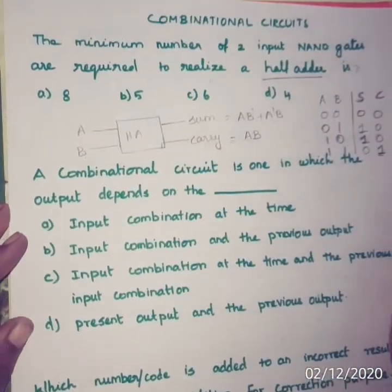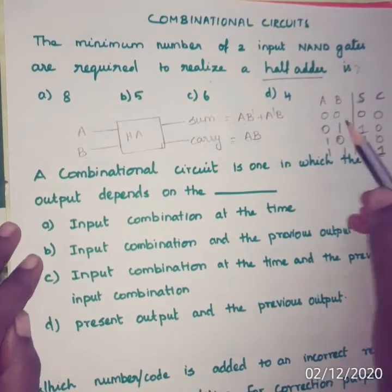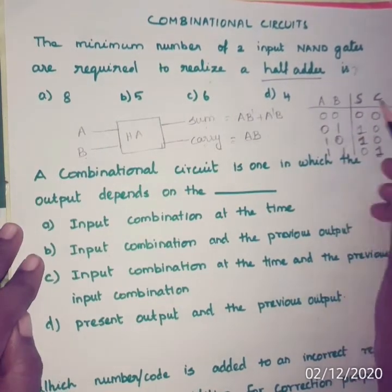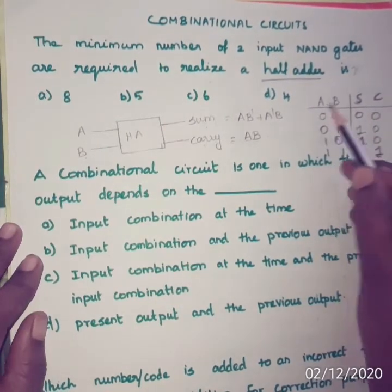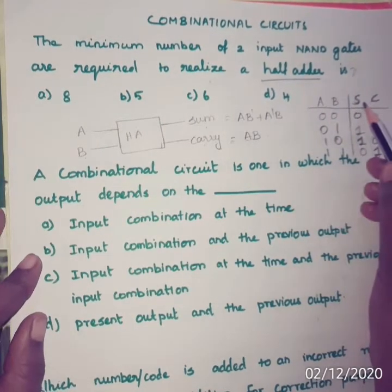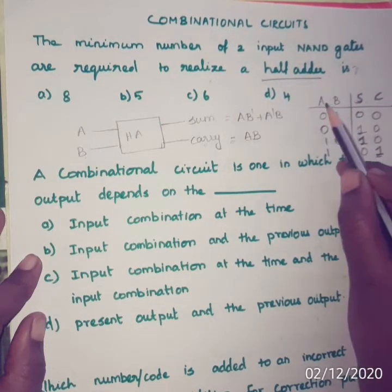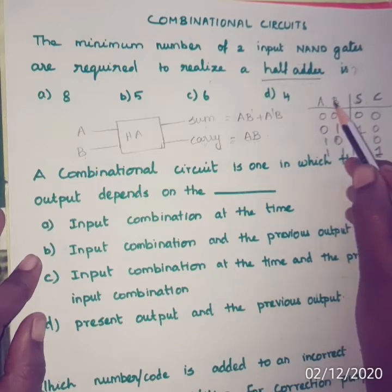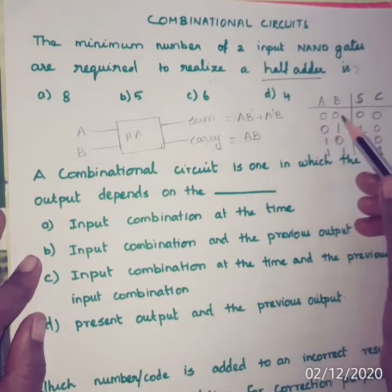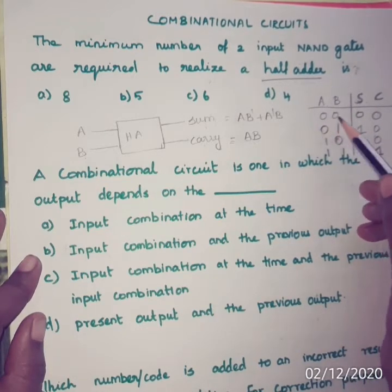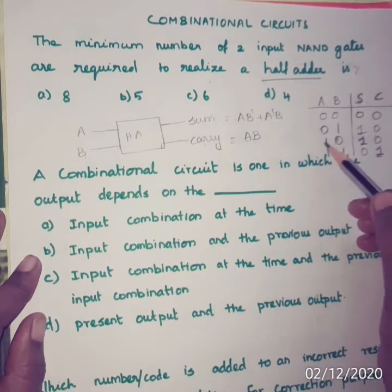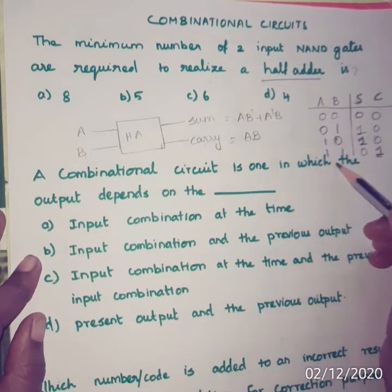Next, we will write the truth table. This column is input and this one is output. Two inputs A and B, with 4 possible combinations: 0 0, 0 1, 1 0, 1 1.